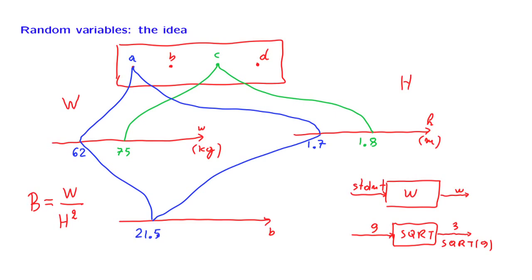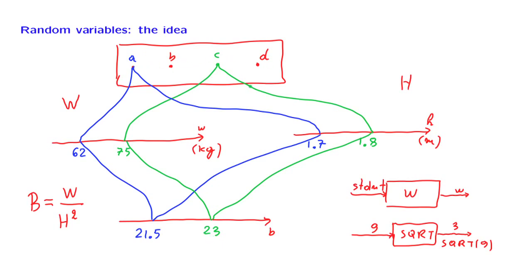Or if it happened that this other student was selected, then the body mass index would turn out to be some other number — in this case, 23. So again, we see that the body mass index can be viewed as an abstract concept defined by this formula, but once an outcome is determined, then the body mass index is also determined. The body mass index is really a function of which particular outcome was selected.